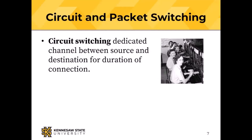Circuit switching creates a dedicated channel between source and destination that is present for the duration of the connection. The classic example is a telephone switchboard, where operators physically plug wires into jacks to create an electrical connection between two endpoints. That is how telephone switching worked before dial telephones and for quite a while after for long-distance and company calls.